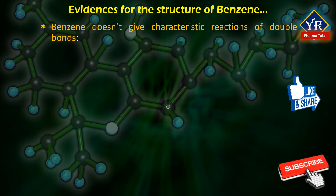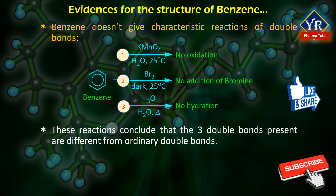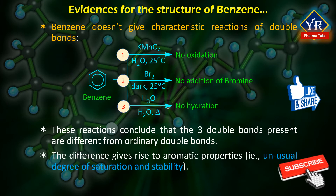However, benzene does not give certain characteristic reactions of double bonds. Number one, benzene remains unaffected on treatment with potassium permanganate under normal conditions. Number two, benzene does not give addition reactions with halogen acids. And number three, in the absence of sunlight and in the presence of a Lewis acid catalyst, it undergoes electrophilic substitution rather than addition reactions. All these reactions lead to the conclusion that although benzene contains three double bonds, these are remarkably different from ordinary double bonds.